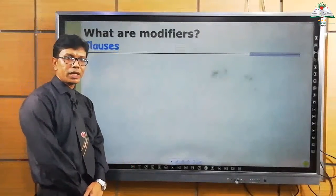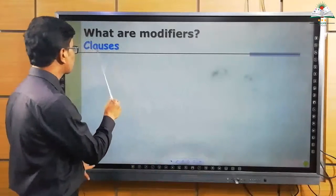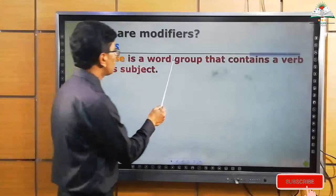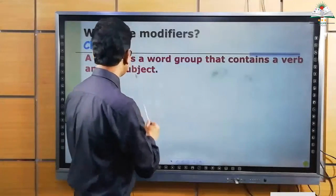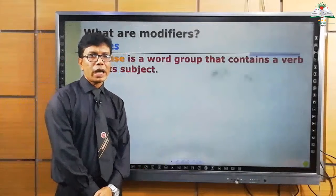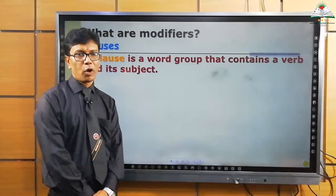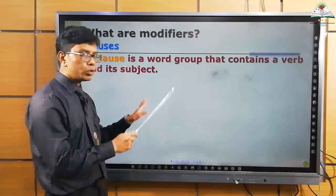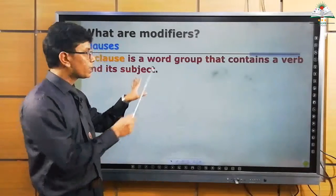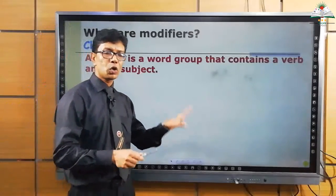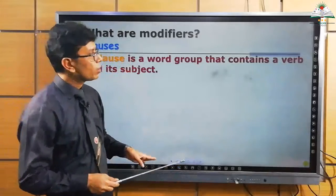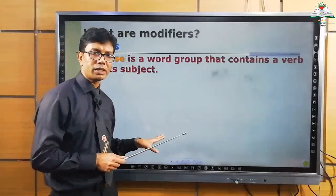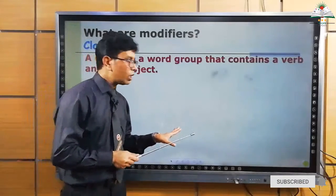In this slide you can see what modifiers are. We are going to discuss clauses. What is a clause? A clause is a word group that contains a verb and its subject. In the study of modifiers, clause and phrase are two very important terms. We have already learned about different phrases in our previous classes, and today we are learning about clauses. A clause is a part of a sentence — not the whole sentence — but it plays the role of a modifier.